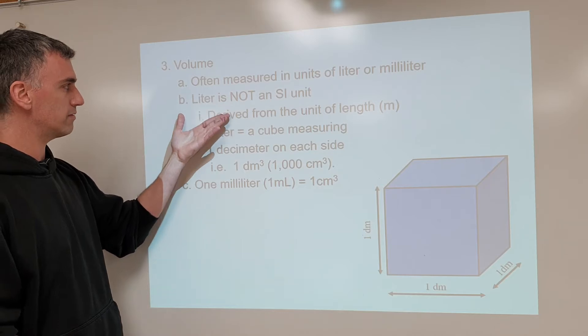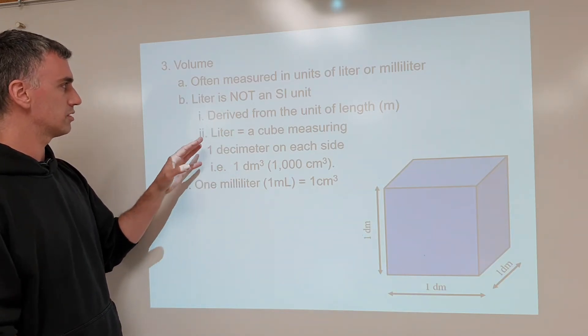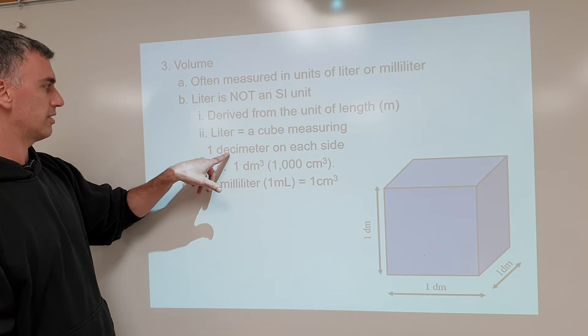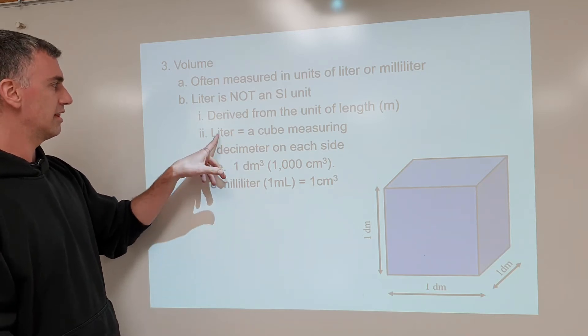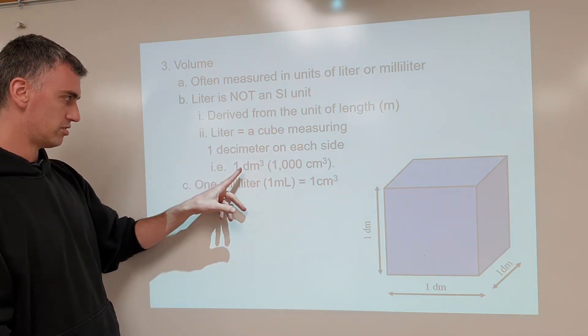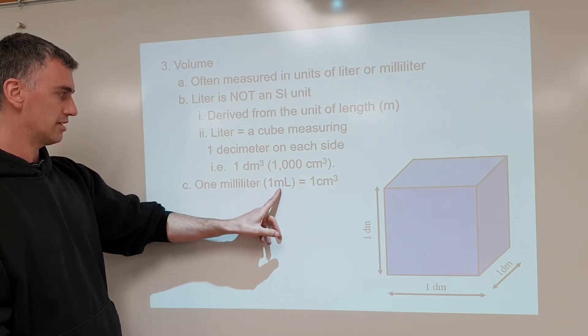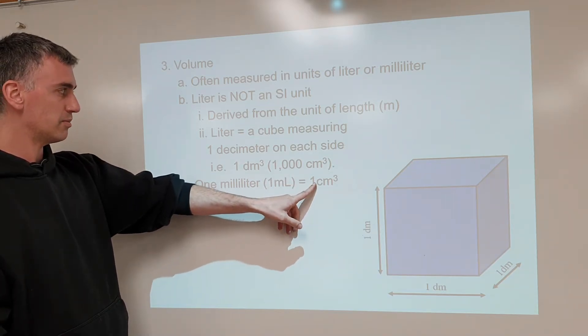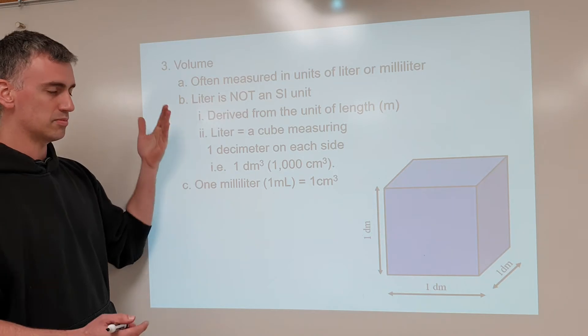It tells you what it's derived from, one decimeter on each side, and it tells you that it's a thousand cubic centimeters, and since a milliliter is a cubic centimeter, a liter is a thousand milliliters. So be familiar with those.